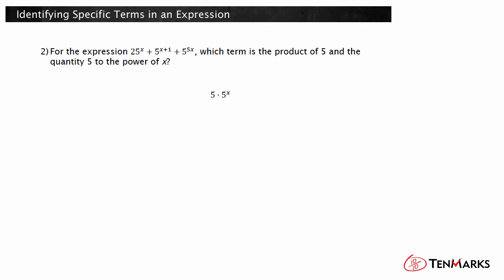The product of 5 and the quantity 5 to the power of x can be written like this. Recall that in the order of operations, exponents are evaluated before multiplication. So we cannot just multiply 5 by 5 and make a base of 25 in this term.